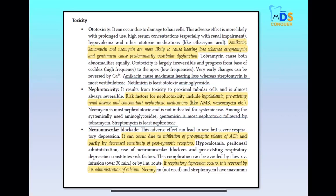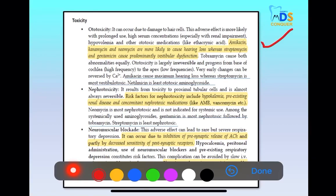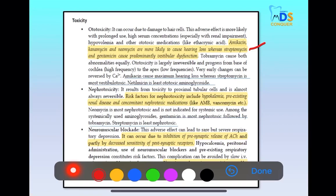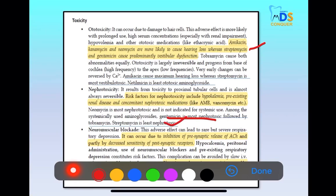Regarding toxicity: aminoglycosides are ototoxic, nephrotoxic, and neurotoxic — they can cause neuromuscular blockade. For exam questions about maximum hearing loss, the answer is amikacin. Streptomycin is the most vestibulotoxic — vestibular dysfunction is maximum with streptomycin, whereas maximum hearing loss is with amikacin.